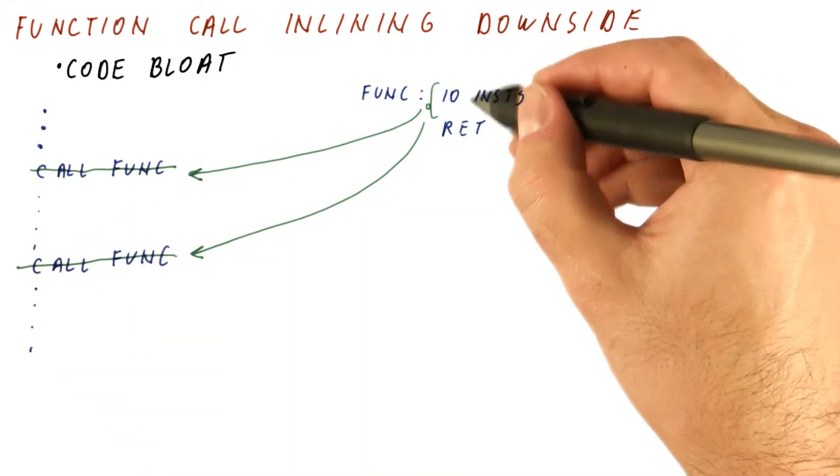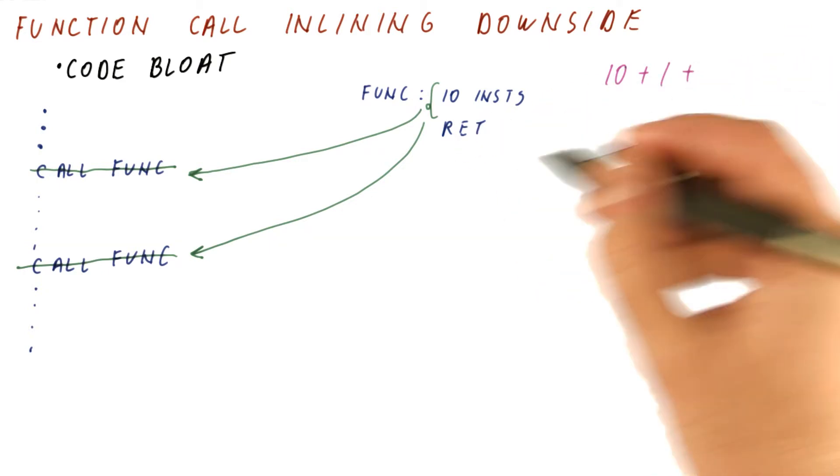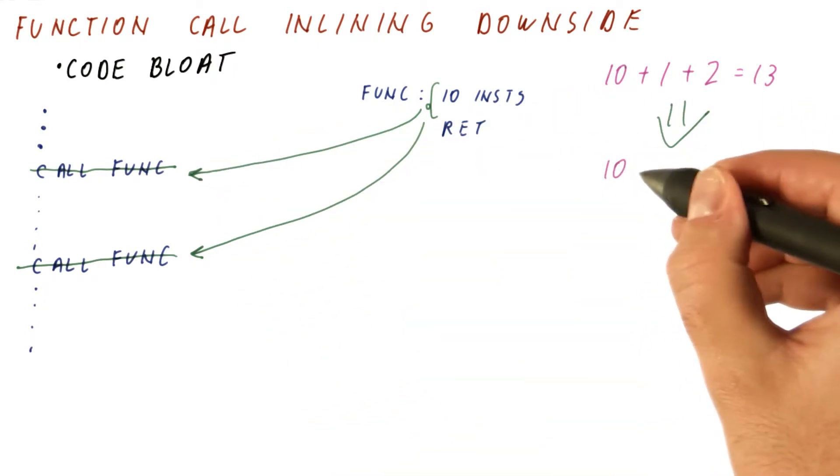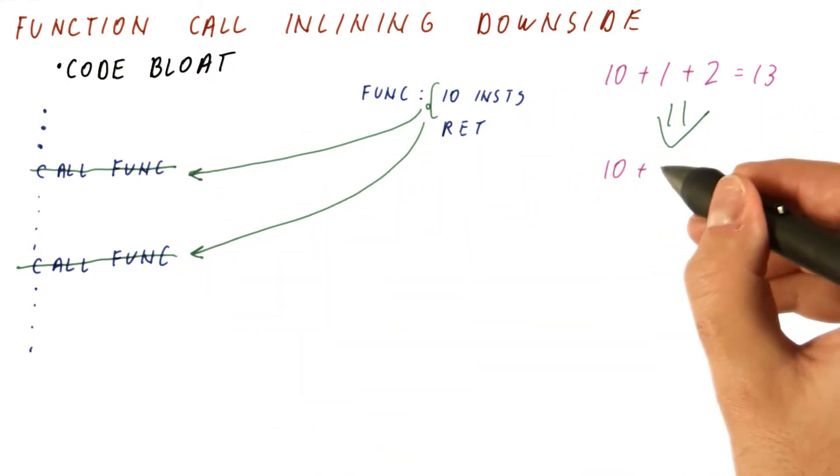So what used to be 10 instructions, plus one for the return, plus two for calling, altogether 13 instructions, now becomes 10 instructions here, and 10 instructions here.